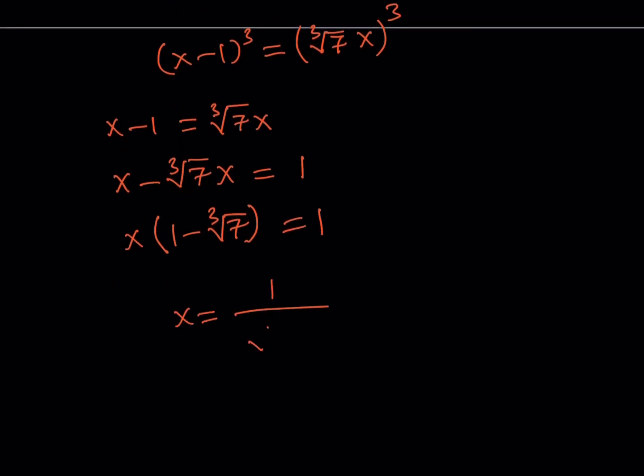And what is that going to give us? That's going to give us the solution. So we're getting x equals 1 over 1 minus cube root of 7. Now, at this point, you may want to rationalize the denominator.